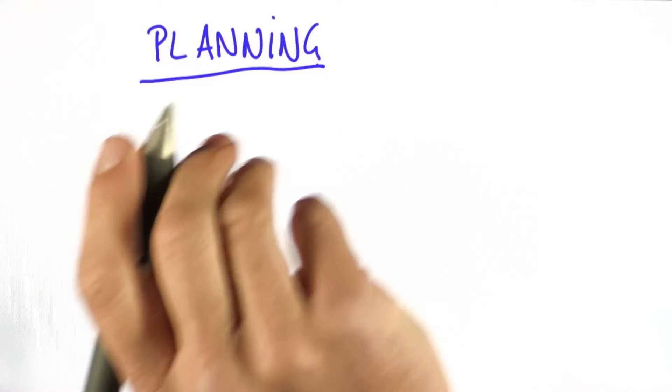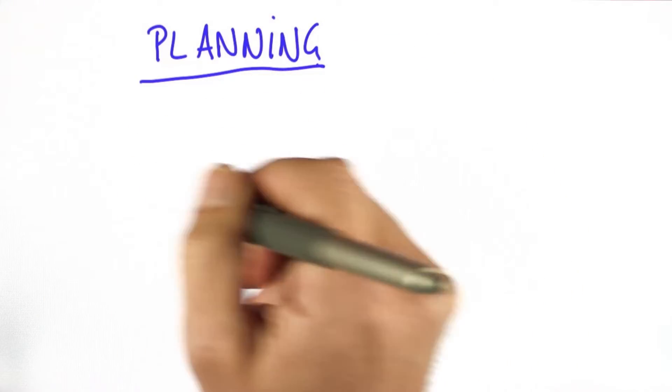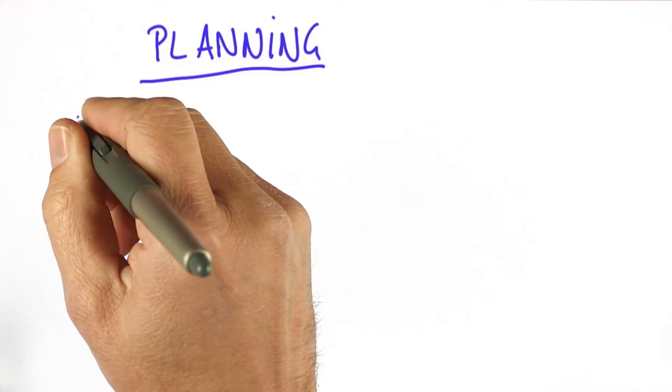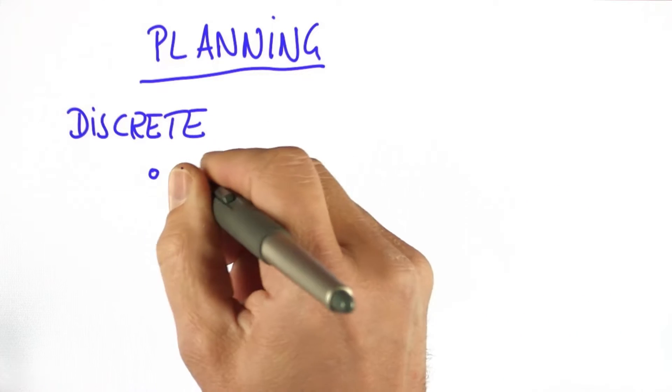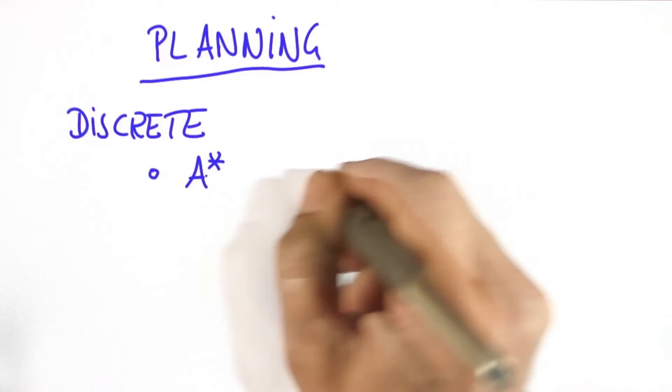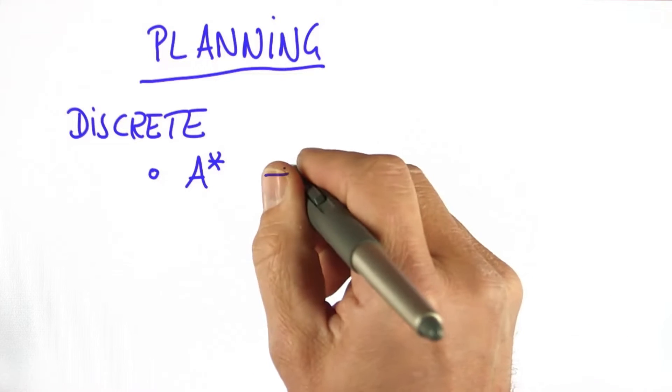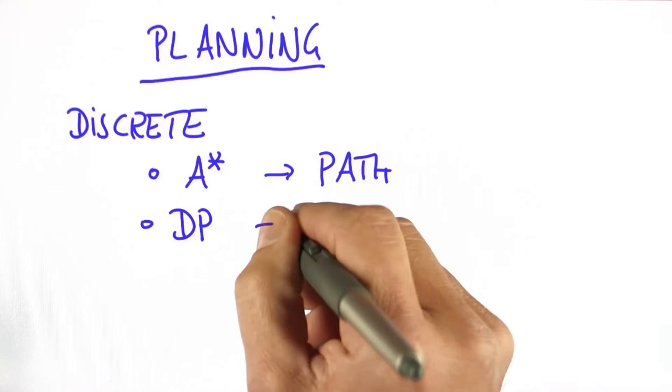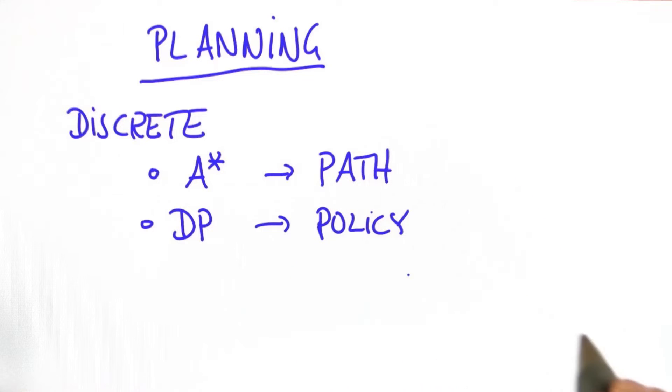So congratulations, you made it to my first motion class. Today we assumed that the world is discrete, and we looked at two planning algorithms: A*, which uses a heuristic to find a path, and dynamic programming, which finds an entire policy, that is a plan for every location. We implemented both of them.